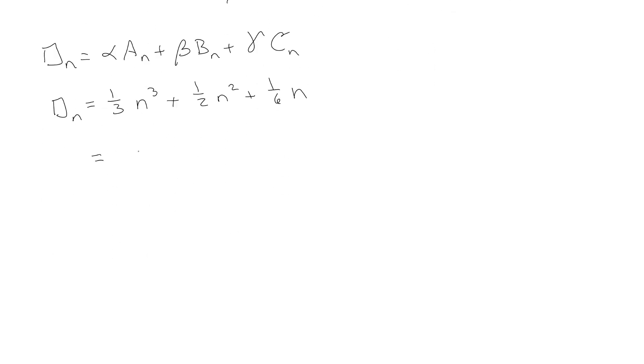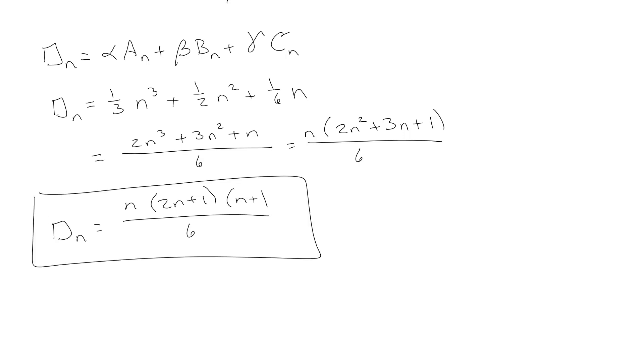Once you know how to do repertoire, it's actually pretty quick. Let's put everything over 6: 2n cubed plus 3n squared plus n over 6. This is actually one that we had already done. We just have to factor it out one more time: 2n plus 1 times n plus 1 over 6. And actually that's the same answer we've gotten now three other times just by a totally different method.